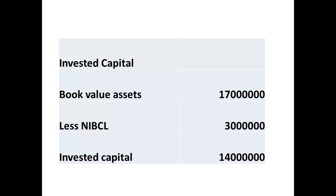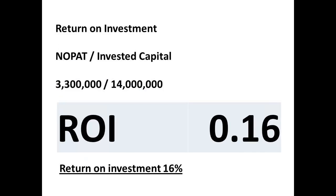Now let us consider the measurement for invested capital. The book value for the assets was $17,000,000. If non-interest bearing current liabilities are $3,000,000, then the figure for invested capital becomes $14,000,000. To obtain our return on investment figure, we divide the NOPAT figure by invested capital. So dividing $3,300,000 by $14,000,000, we have a return on investment of 0.16, which is more likely to be expressed as a return on investment of 16%.